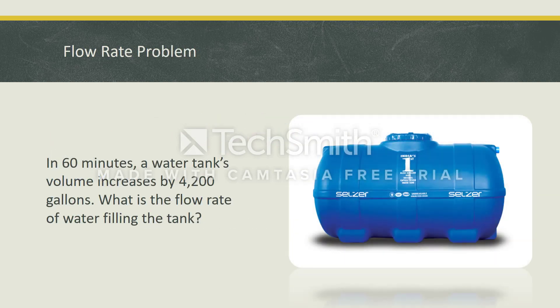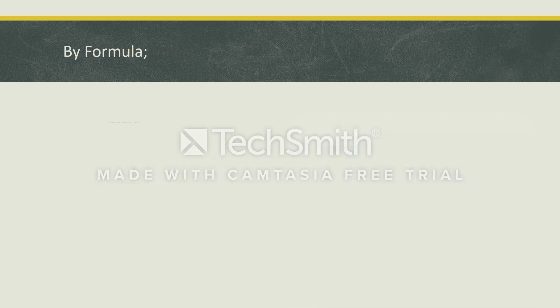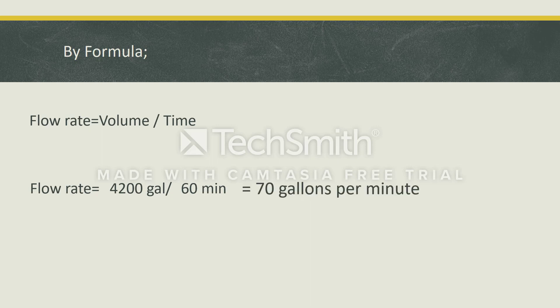Let's look at a problem. In 60 minutes, a water tank's volume increases by 4200 gallons. So what is the flow rate of water filling the tank? From the formula, flow rate equals the volume per time. It means 4200 gallons per 60 minutes gives us the flow rate of water, which is 70 gallons per minute.